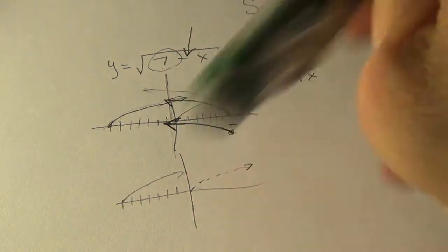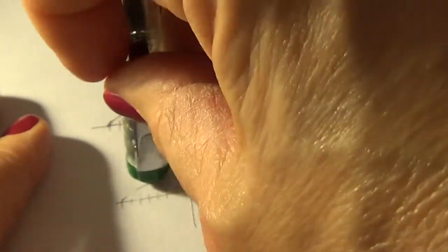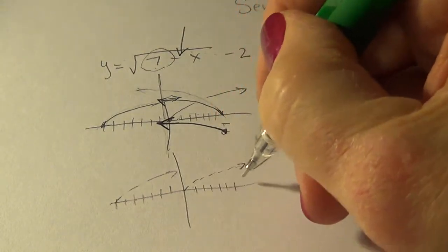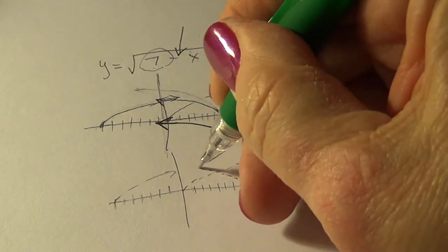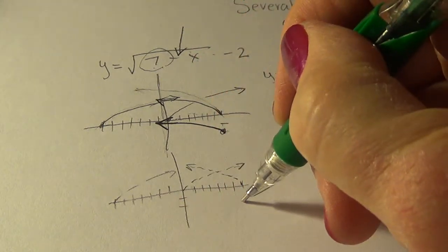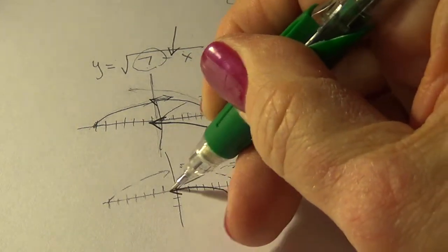You would reflect it. Oops. Trying to show you how to dot it. Then you would reflect it. And you would drop it down two. So the final answer is right there.